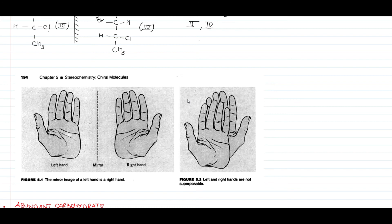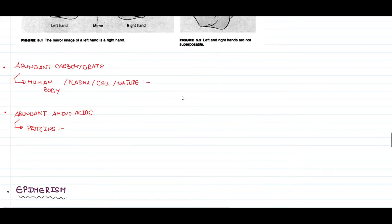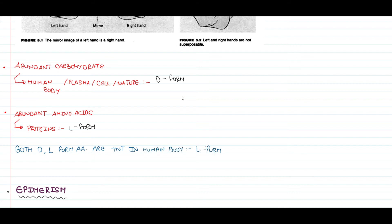Some important facts: the abundant form of carbohydrate in the human body, plasma, cells, or nature is the D form, whereas the abundant form of amino acids in proteins is the L form. Both D and L forms of amino acids are present in the human body, but the most abundant is L. The D form of amino acids in the body is usually taken from dietary (exogenous) sources. The L form of carbohydrate is usually present in the bacterial cell wall.